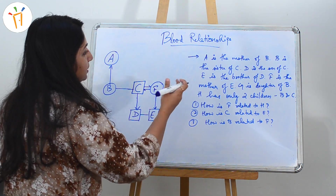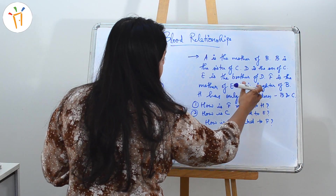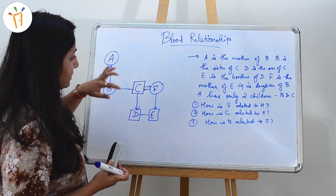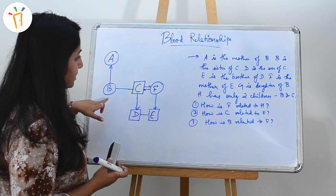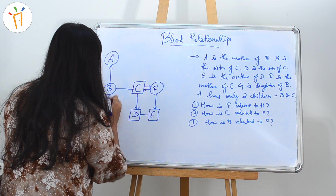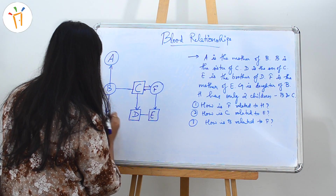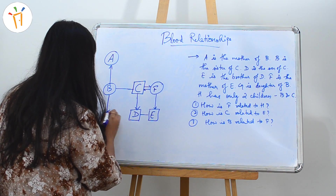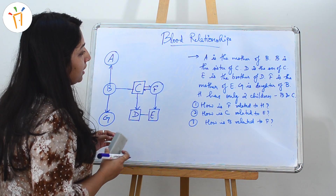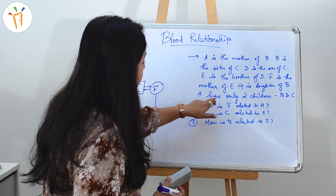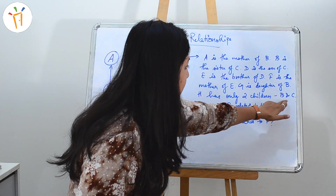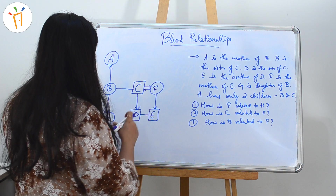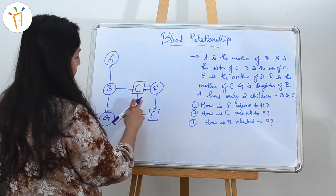G is the daughter of B. B is here, and it is said G is the daughter of B, so we write G below B. Since G is the daughter, we denote her with a circle. Now it says H has only two children B and C — we have B here and C here, and we know A is the mother of B.